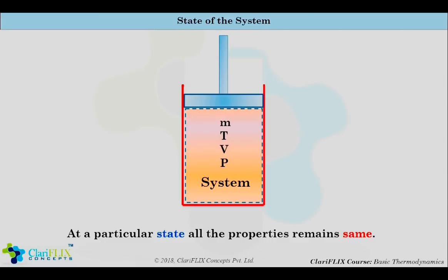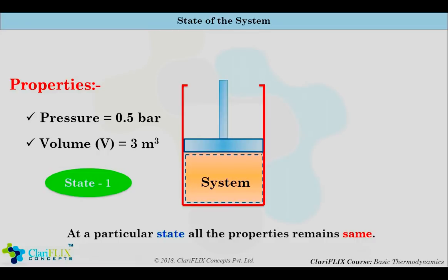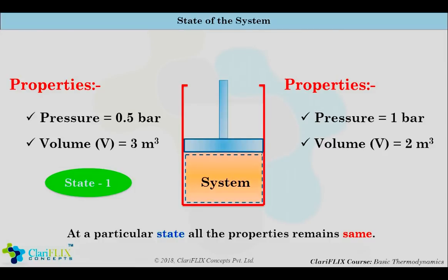For example, consider our system having pressure equal to 0.5 bar and volume equal to 3 meter cube — this is a fixed state called state one. Now we are pushing our piston downwards, so pressure will increase and volume will decrease. Pressure has increased to 1 bar from 0.5 bar, and volume has decreased to 2 meter cube from 3 meter cube. That is why it is called state two.